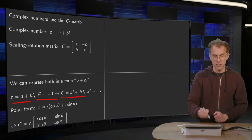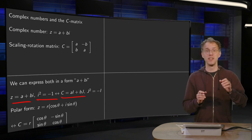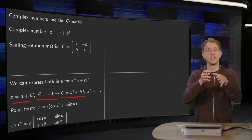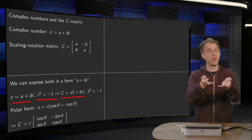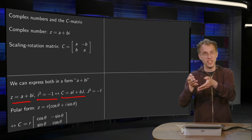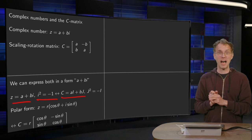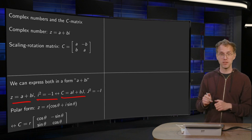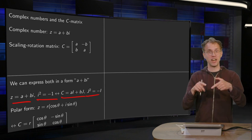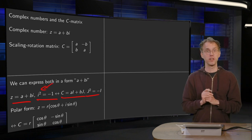For the scaling rotation matrix C, you have something similar. C equals a times the identity matrix — so the identity matrix plays the role of 1 — plus b times J, where the J matrix plays the role of the imaginary unit i. Because if you compute J squared you get minus the identity matrix, just as its counterpart for a complex number.